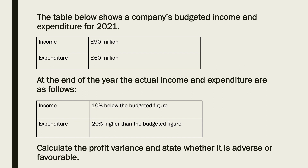The table below shows a company's budgeted income and expenditure for 2021. Income is 90 million and expenditure is 60 million. At the end of the year, the actual income and expenditure are as follows: the income was 10% below the budgeted figure, and the expenditure is 20% higher than the budgeted figure. Calculate the profit variance and state whether it is adverse or favourable.